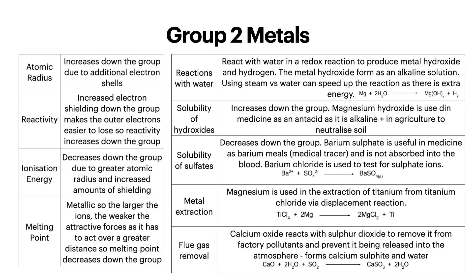Now looking at group 2 metals. Atomic radius increases down the group due to additional electron shells. Reactivity: increased electron shielding down the group makes the outer electrons easier to lose, so reactivity increases down the group. Ionisation energy decreases down the group due to greater atomic radius and increased amounts of shielding. Group 2 metals are metallic, so the larger the ions, the weaker the attractive forces as they act over a greater distance — so melting point decreases down the group.